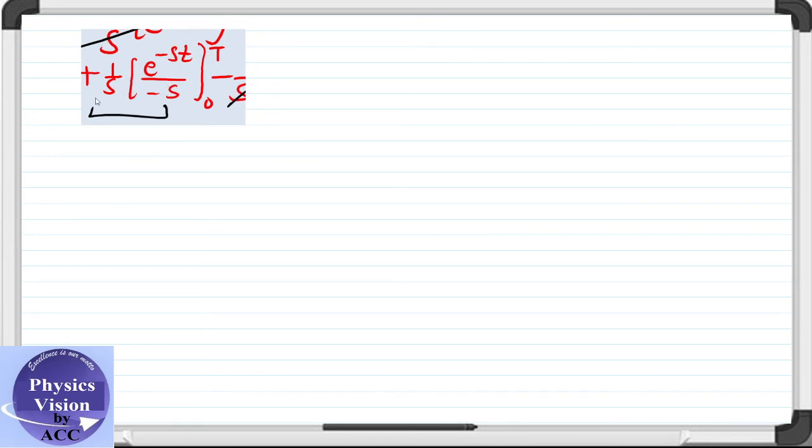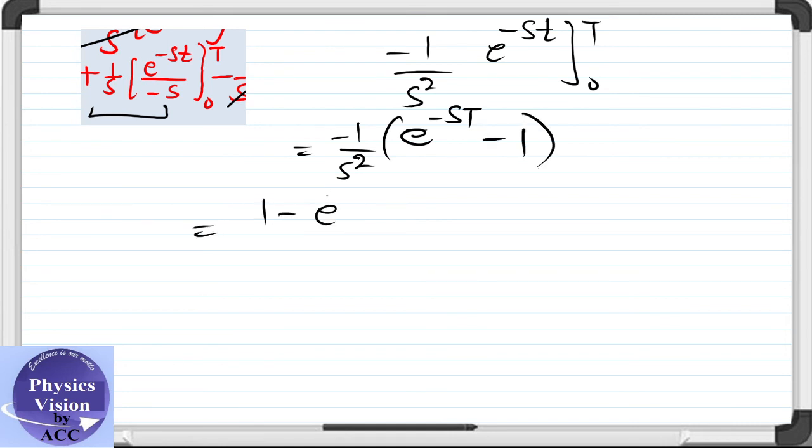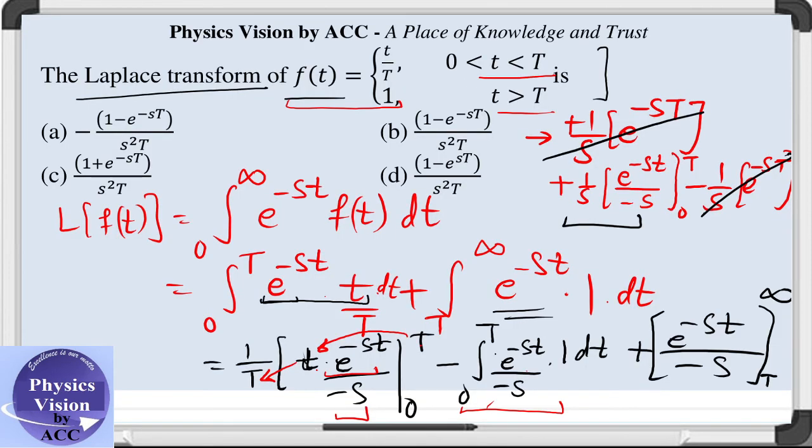This will be equal to minus of 1 by s square and e raised to the power minus st minus 1. So, we have 1 minus e minus st divided by s square as our result. So, this is a...